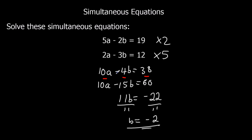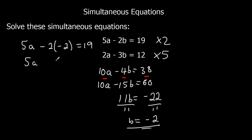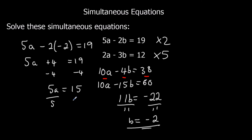Then we're going to substitute it back in to one of the original equations. So 5a minus 2 times minus 2 equals 19. Minus 2 times minus 2 is a plus 4 — negatives times negatives are positive. Minus 4 from both sides: 5a equals 15. Divide both sides by 5, so a is equal to 3.